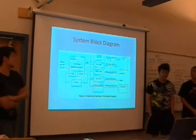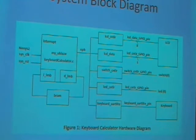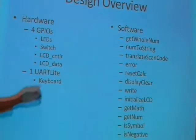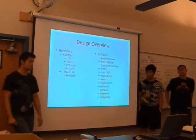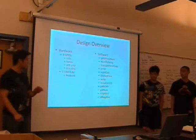This is our system block diagram. We use 4G code and then the UART of the keyboard. Here's the hardware. For the software, we wrote mostly functions for the calculator. Get number is basically a string-to-integer function, and another string translates scan codes to the keyboard.